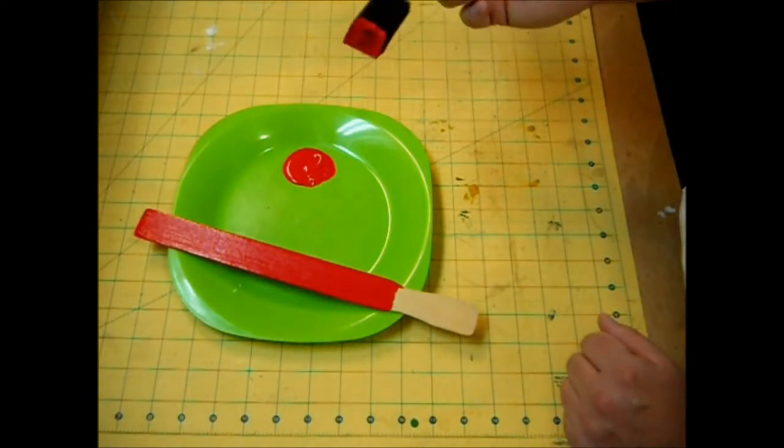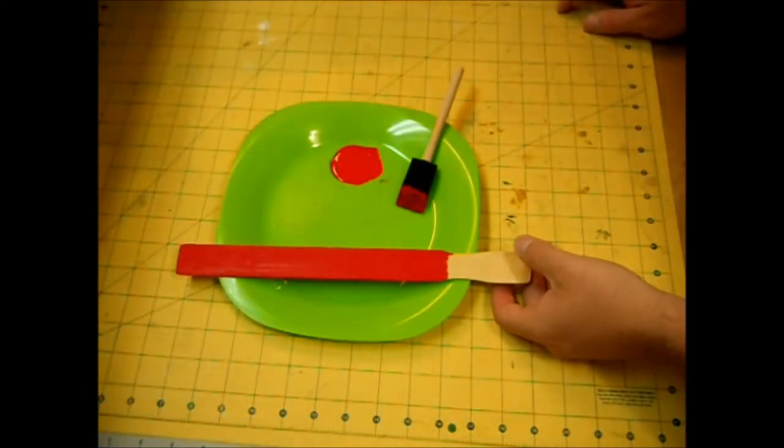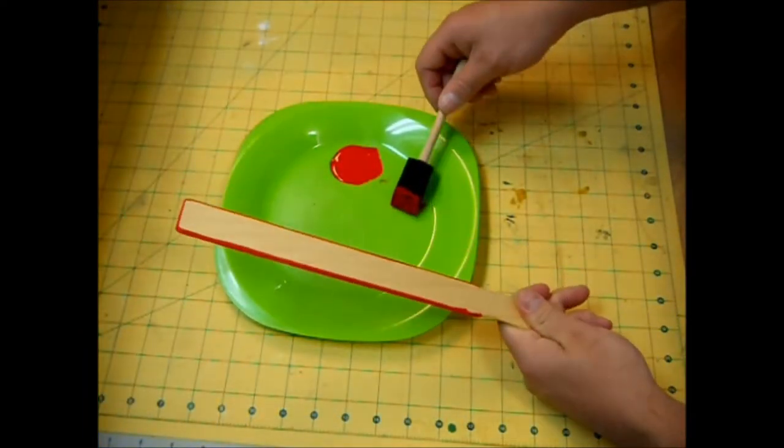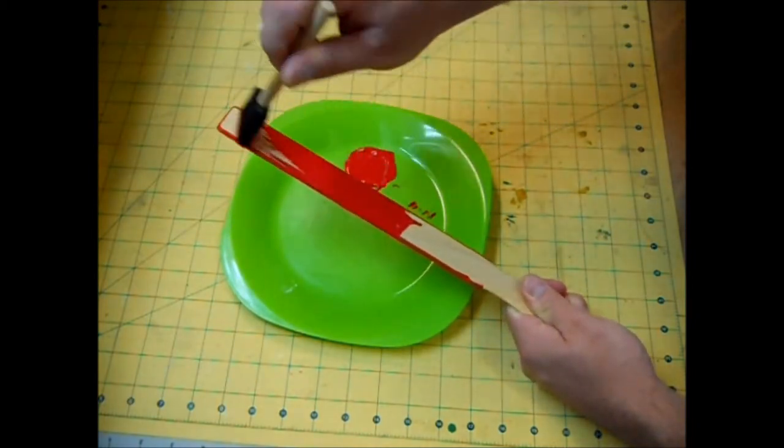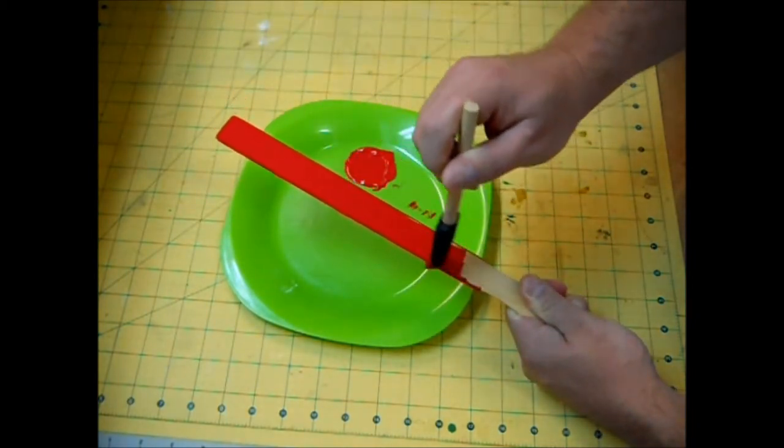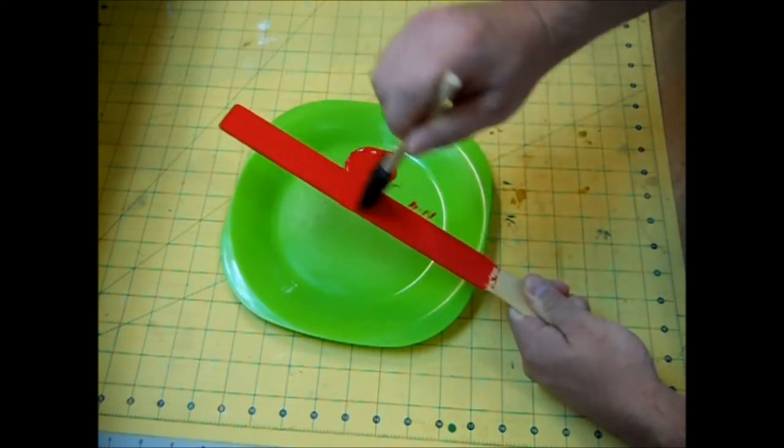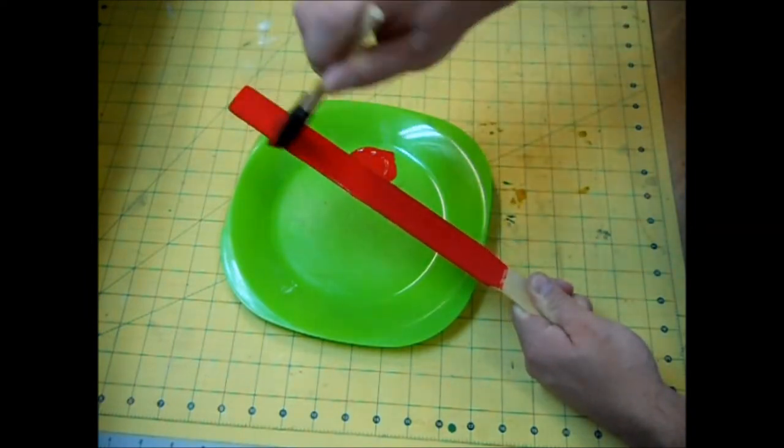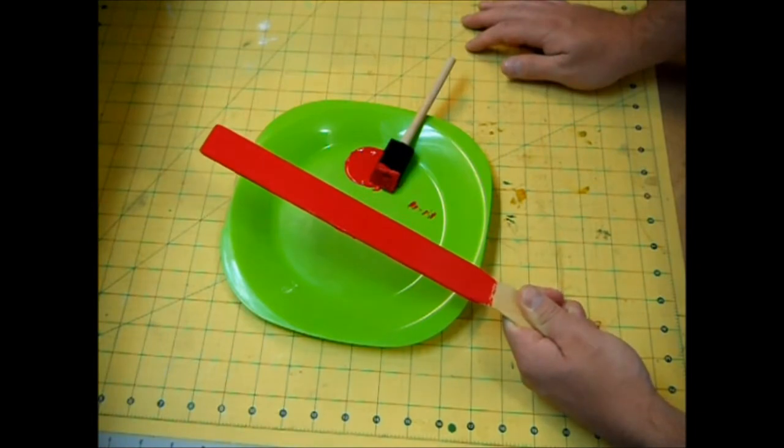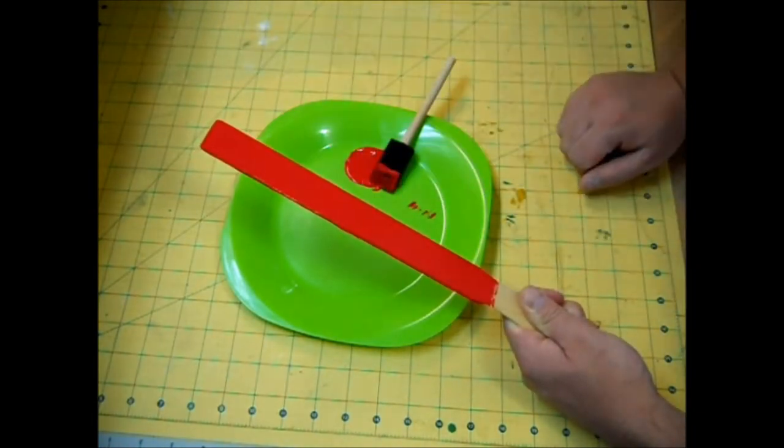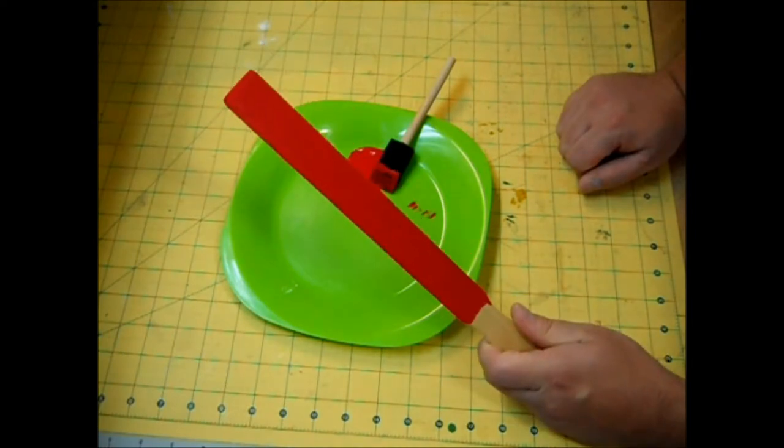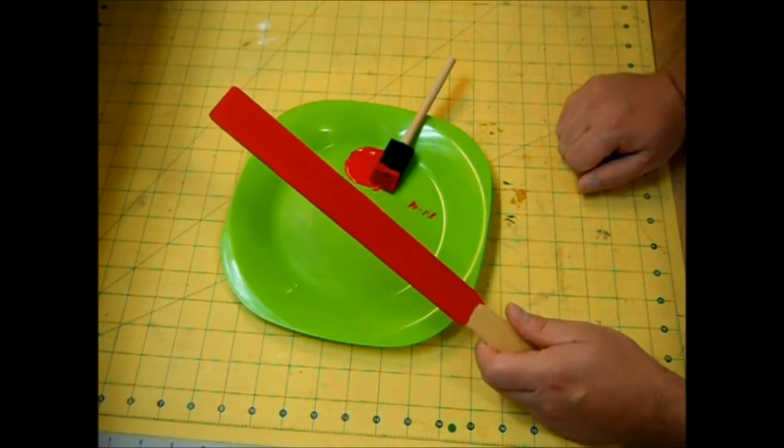All right guys, now that this side is dry I'm going to go ahead and flip it over and paint the back. Now I'm only going to give this one coat because I don't mind seeing the wood grain or a little bit of the faded wood in the back, but if you want a more solid color go ahead and put two coats.